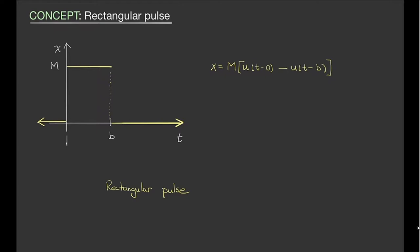First, we'll look at the concept of a rectangular pulse. Suppose we have this function in yellow, where we are zero up until we hit the t value. Then we're at a height m, some positive number, for some time until we reach time b. And then after that, it's zero. This is called the pulse because we go along, there's no activity, all of a sudden it jumps up and then jumps back down — there's a surge of activity.